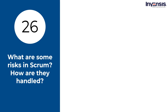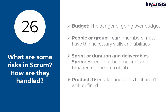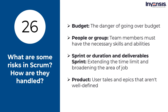What are some risks in Scrum and how are they handled? Some examples of Scrum risks are budget — the danger of going over budget; people or groups — team members must have the necessary skills and abilities; sprint or duration — extending the time limit and broadening the area of job; product — user stories and epics that aren't well defined; and not having appropriate resources. Identifying, assessing, analyzing, developing, and implementing risk responses and monitoring and managing them is all part of risk management. These are carried out continuously from the beginning to the end of the project, and it is critical to recognize that proximity to actual occurrence determines the risk's impact.